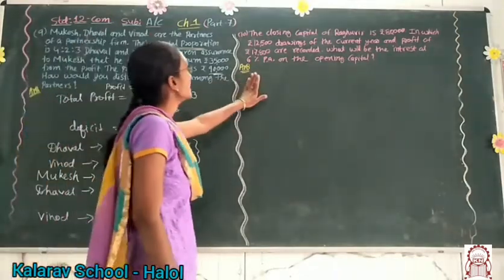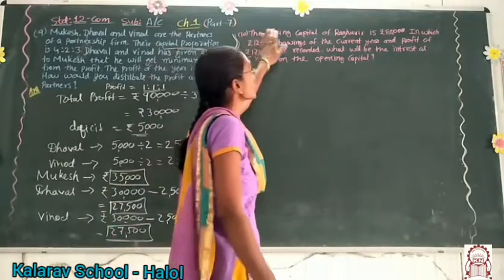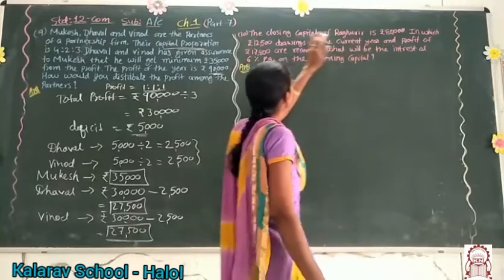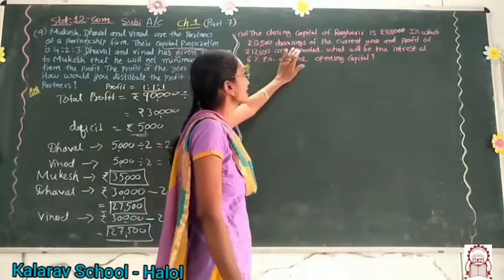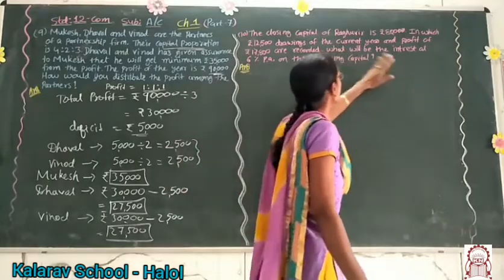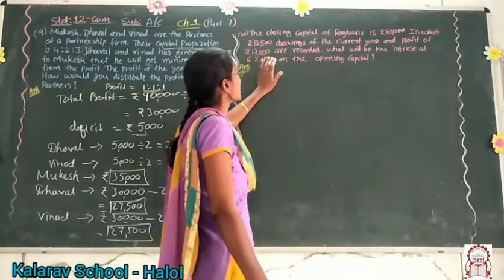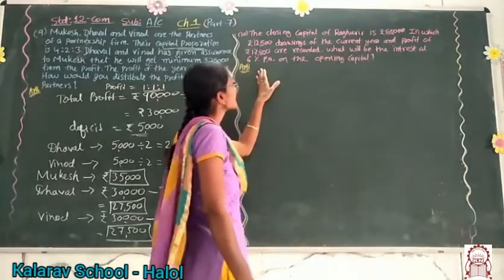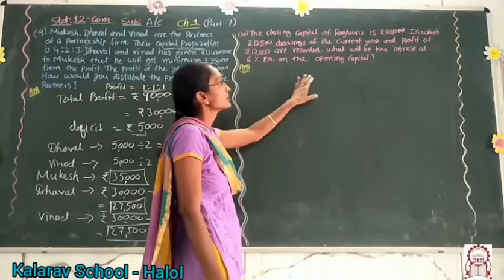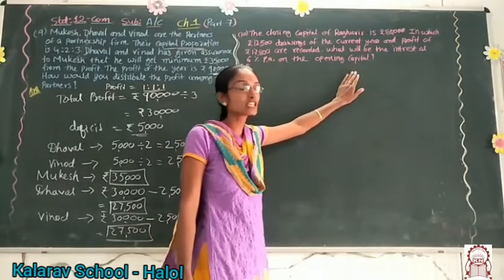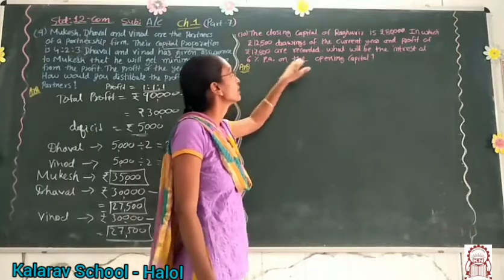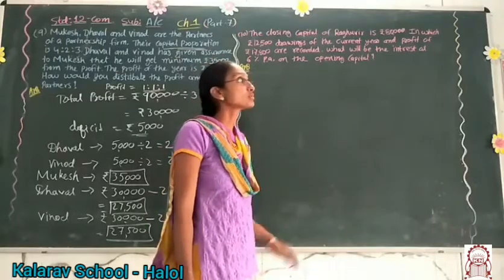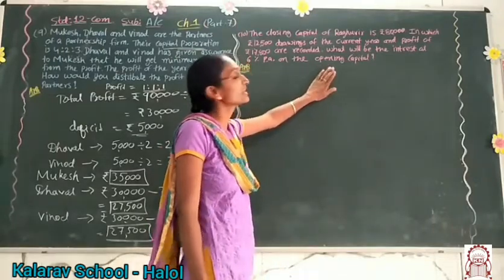Now our next sum is number 10. The closing capital of Rabuvi is Rs. 80,000, in which Rs. 12,500 is drawings of the current year and profit of Rs. 13,800 is recorded. What will be the interest at 6% per annum on the opening capital? So closing capital is given and we have to calculate the interest on the opening capital.